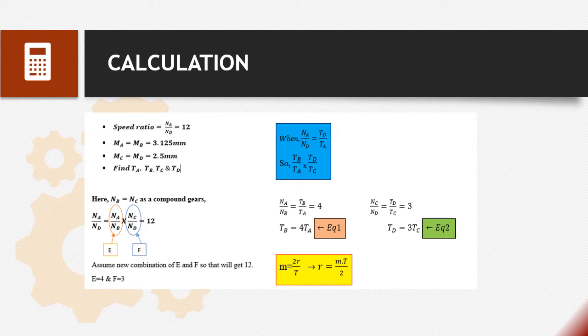For question one, we need to find TA, TB, TC, and TD. Here, NB and NC are compound gears, so NA over NB we assume as E multiply with NC over ND that we assume as F. Assumption of new combination of E and F must get 12, so we assume E equals 4 and F equals 3.